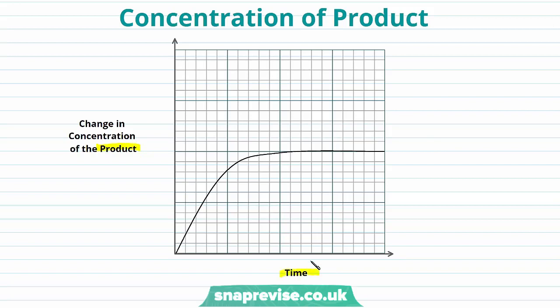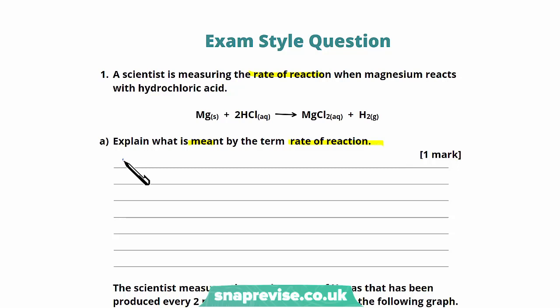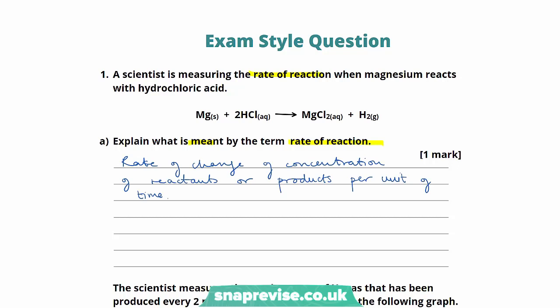A scientist is measuring the rate of reaction when magnesium reacts with hydrochloric acid. We're asked: what is meant by the term rate of reaction? The rate of reaction is simply the rate of change of concentration of our reactants or our products per unit time — a straightforward definition to get us that first mark.